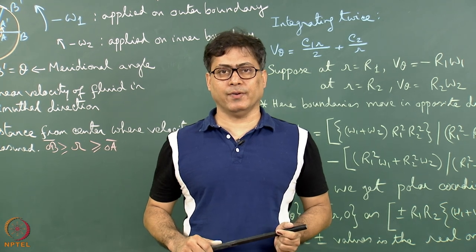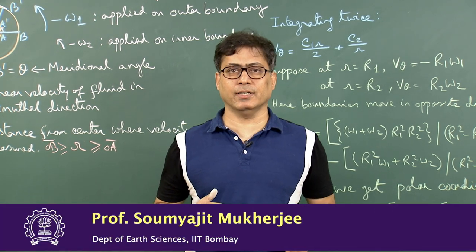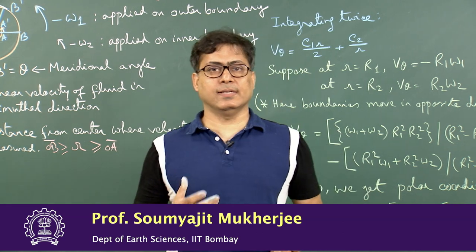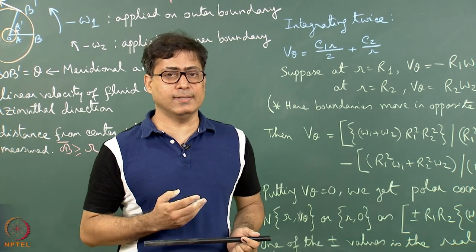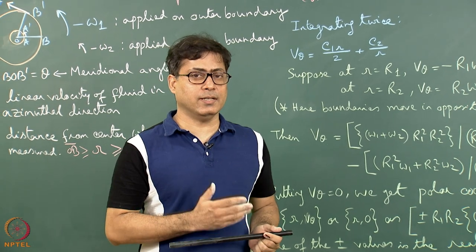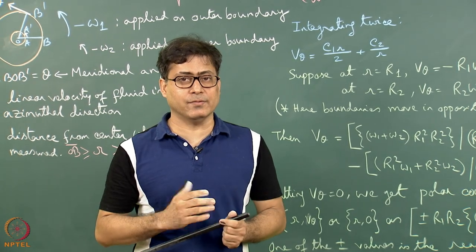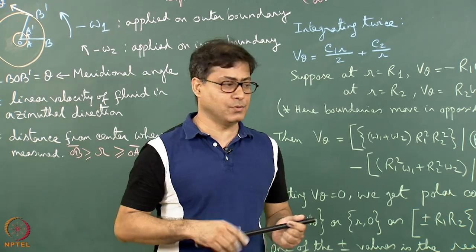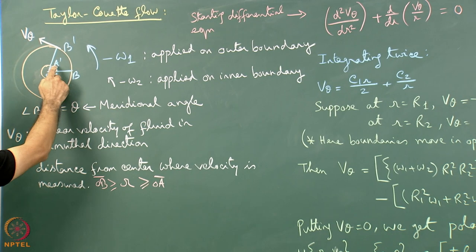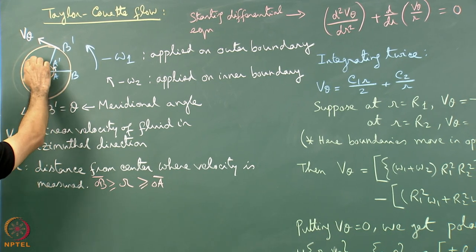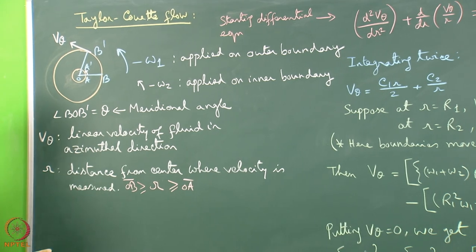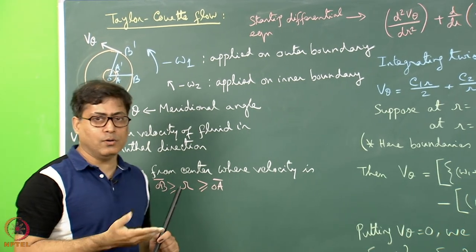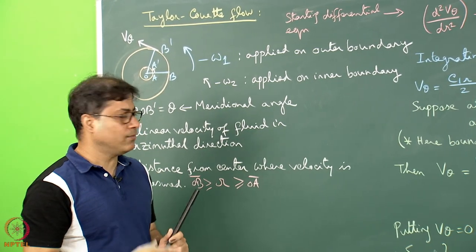We are now going to see how to find the velocity profile for the Taylor-Couette flow. We will work in polar coordinates, unlike the previous deduction for the parallel boundary case where Cartesian coordinates were used. There is an outer circle and an inner circle. The hollow space between them contains a Newtonian viscous fluid, and this is a plan view of the two-cylinder situation.